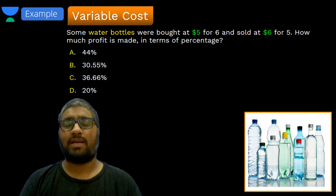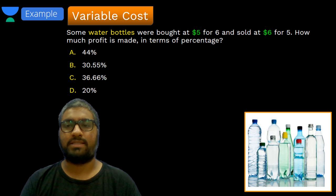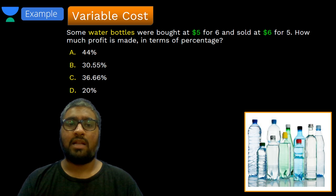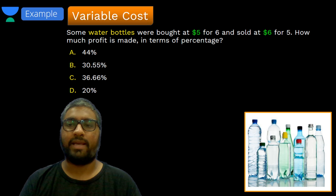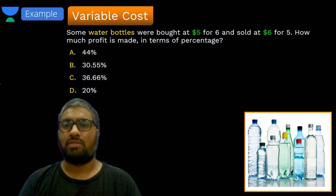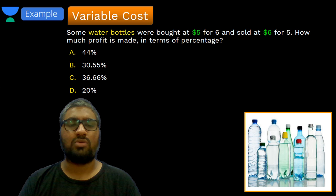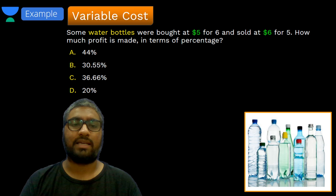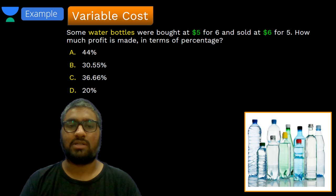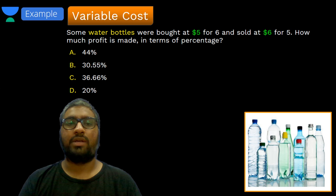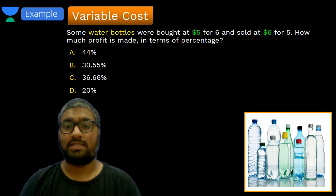What we saw yesterday were questions where there would be one cost given to us and a selling price given to us, and we either had to calculate the profit percentage or loss percentage. Now, this question here on your screen — if you've already seen the question, start solving it. I'm going to give you the usual 90 seconds to go over this question, but I would expect your answers a lot sooner than 90 seconds because there are answer choices also given. Here is a question with the answer choices. I'm going to give you some time to go over it and then we'll start talking about this question.